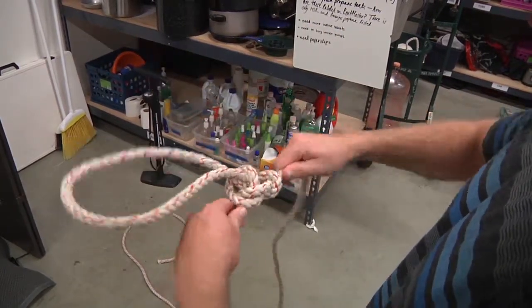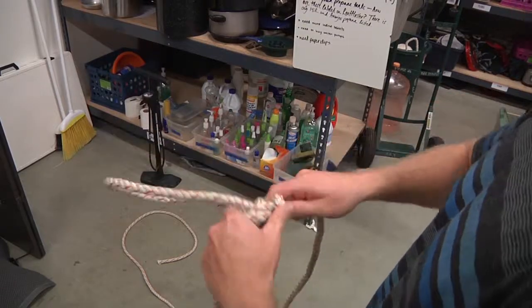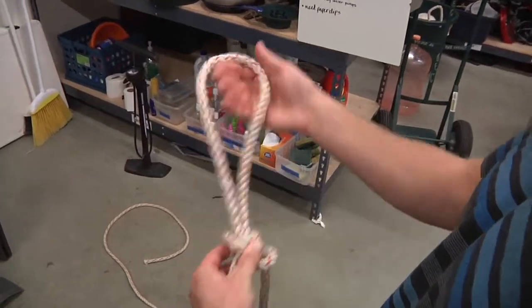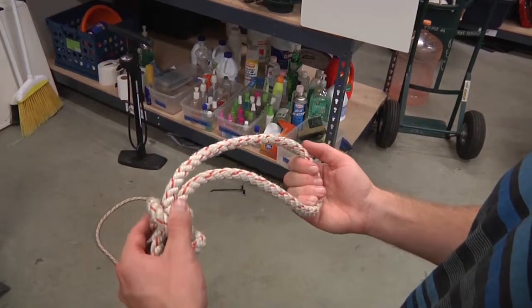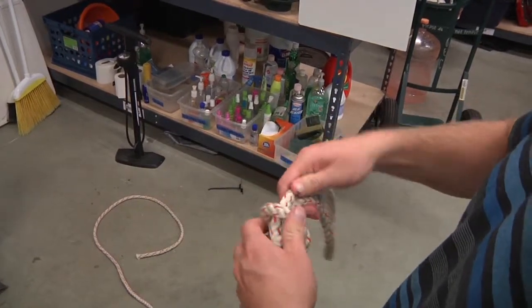And then dress out the knot. Spread the legs. So it looks like that. This is a bigger loop. You can get a foot in there, you can imagine. Alright.